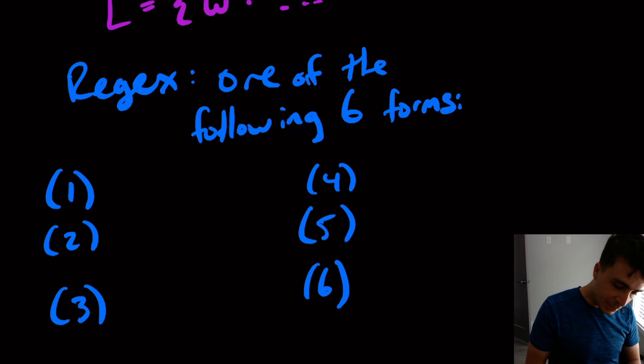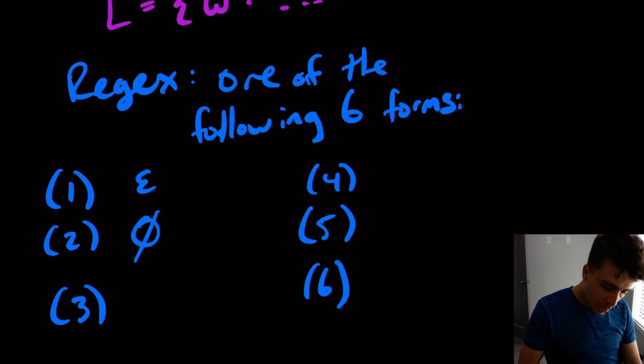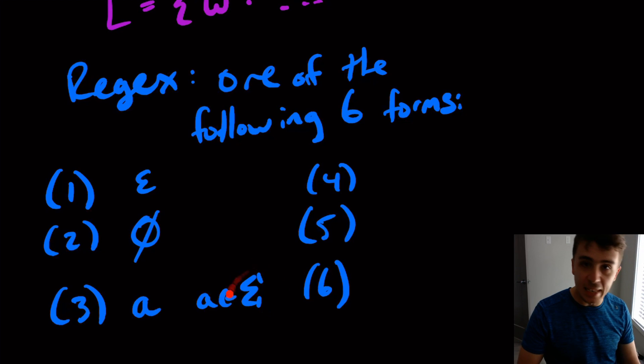So the first case is if it is the empty string. So if it's the empty string, then it's a regex. It could be the empty set, the actual character we're going to call empty set. So if it's that, then it's a regex. If it's a single character where a is in the alphabet sigma. So sigma, again, is the alphabet. That's not going to change. But if it's a single character in there, then it's a regex. So if sigma is zero or one, if I just write down zero, that's a regex.